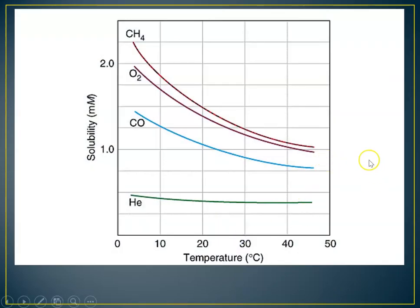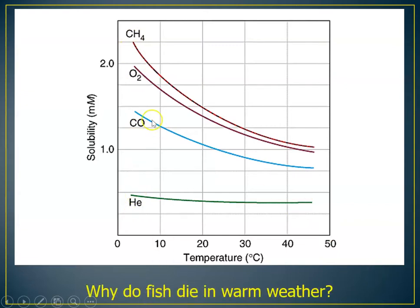Here is a series of curves showing the solubility of gases in water. The solubility is in micromoles per liter, and temperature goes from zero to 50 degrees. The gases shown are methane, oxygen, carbon monoxide, and helium. You might ask: why do fish die in warm weather? If you look at the solubility of dissolved oxygen, it's roughly two micromoles per liter at about five degrees C, and if you heat it up to 45 degrees C, the solubility decreases by half. That's why, if a pond got very hot very quickly, there'd be so little oxygen that the fish could actually die.